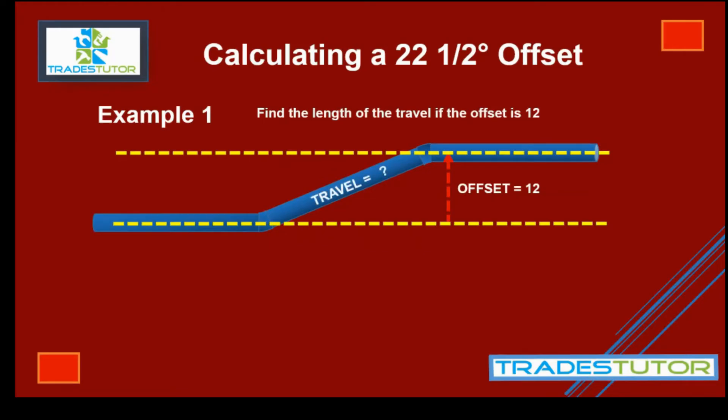And the travel is what we're trying to look for given that offset. The formula we're going to use, well there's the two to choose from, and we're going to choose that one right there.